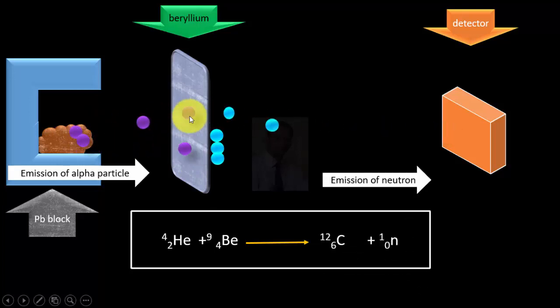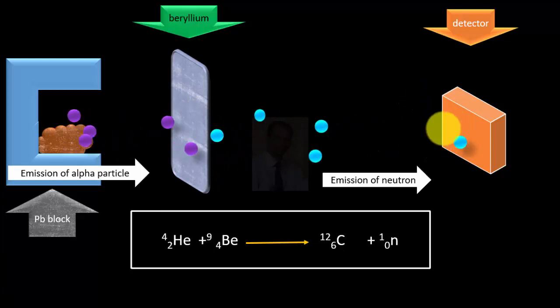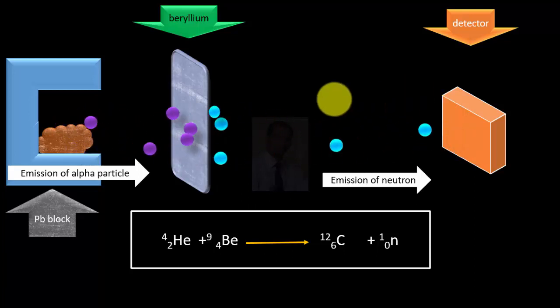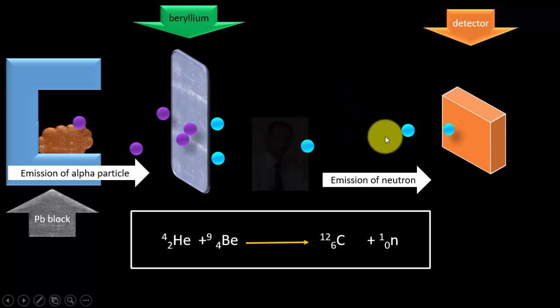So neutrons were being released and these neutrons were going towards detector but detector could not detect these radiations because detector was designed only to detect radiations of either positive or negative charges. Anyway, these radiations were found to be highly penetrating radiations and initially these radiations were thought to be gamma radiations.